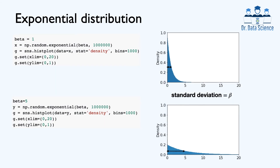How about the standard deviation? We repeat the same experiment and choose two different values of beta. When we increase beta we see that the data is spread more around the mean. In fact, we can prove that the standard deviation of the exponential distribution is also equal to the scale parameter beta. We can easily see that when we increase beta the standard deviation also increases.